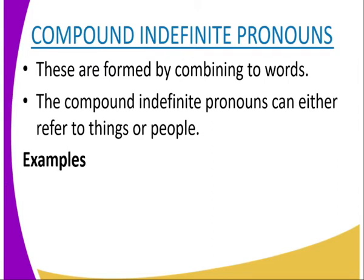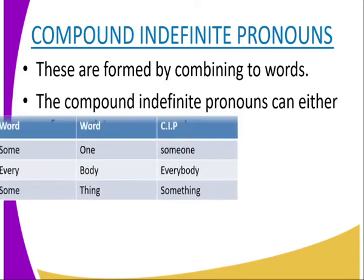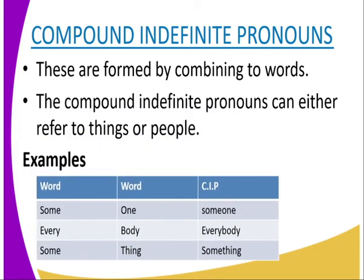Now we can look at compound indefinite pronouns. These are formed by combining two words. Compound indefinite pronouns can either refer to things or people. For example, using the word 'some': 'someone' is a person, 'everybody' is a person, but 'something' is not a person — it refers to things.